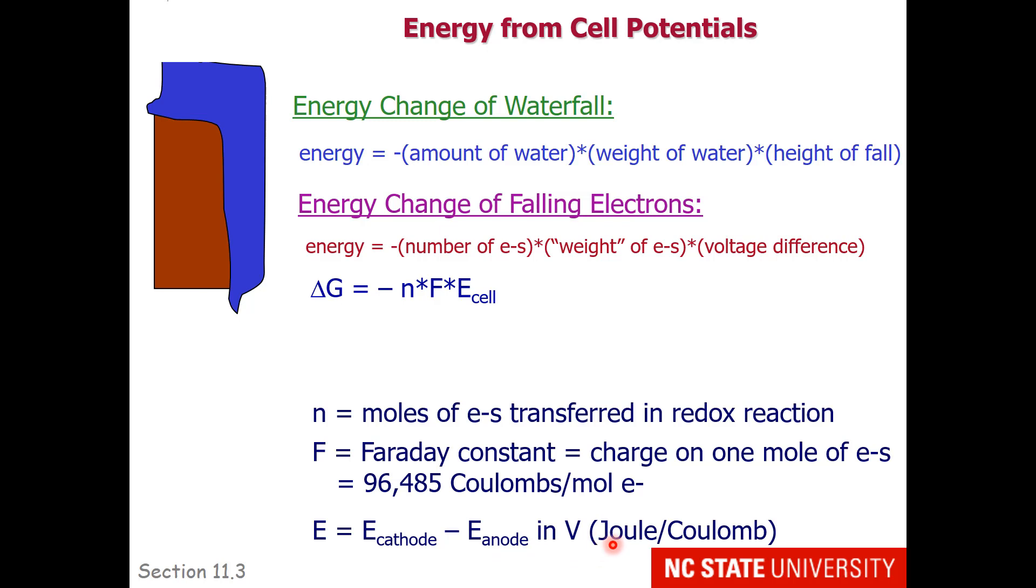Volts can also be expressed as joules per coulomb. So if we look at the units here, we have moles of electron, coulombs per mole of electron, and a volt, which is a joule per coulomb. Cancelling the units, we wind up with units of joules, which is an excellent energy unit.